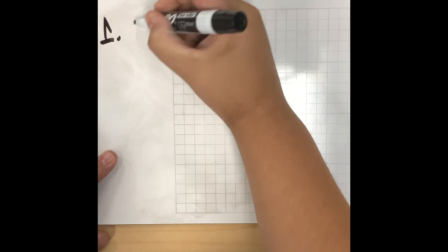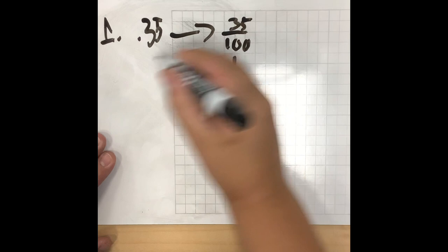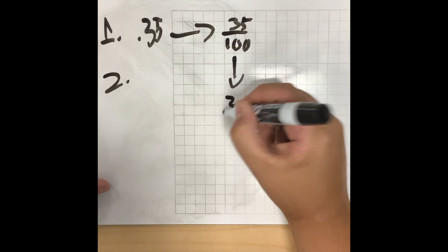Step number one. 0.35. Turn that into 35 over 100. Step number two. Bring the 35 over 100 down.